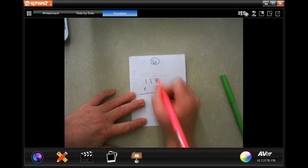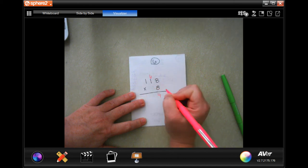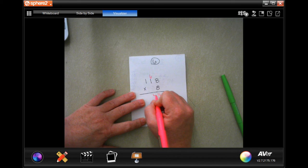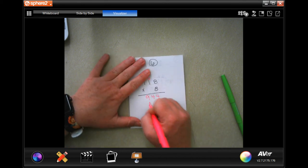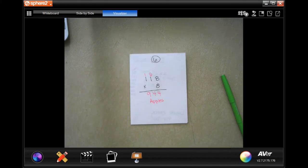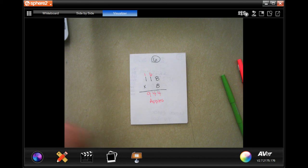8 times 8 is 64. 8 times 1 is 8 plus 6 is 14, carry your 1. 8 times 1 is 8 plus 1 more is 9. So 944 apples. Alright guys, that was lesson 2.5. Come back for 2.6. Thanks!